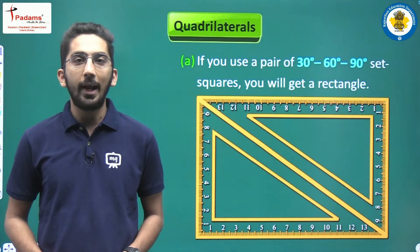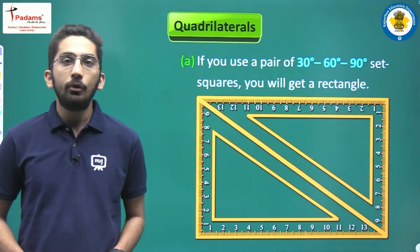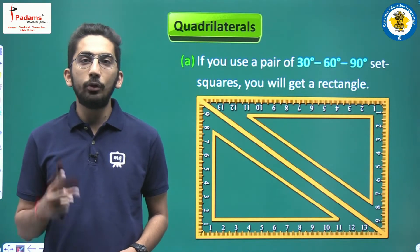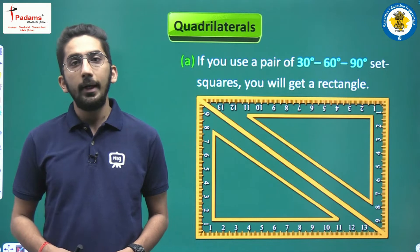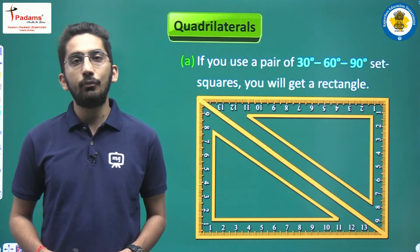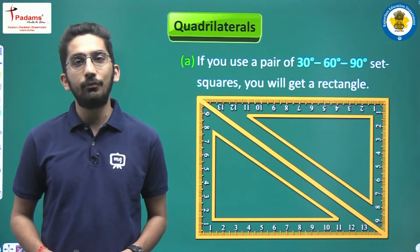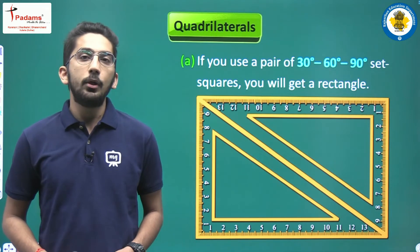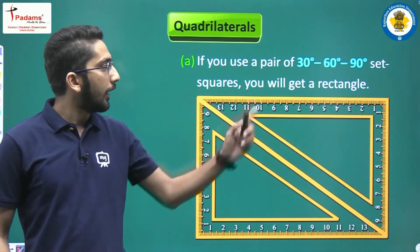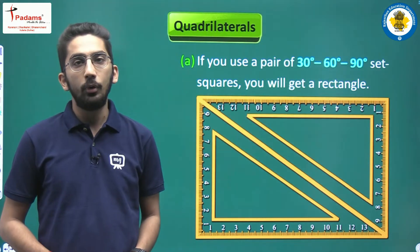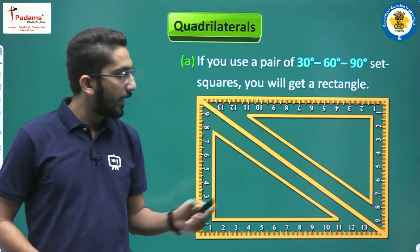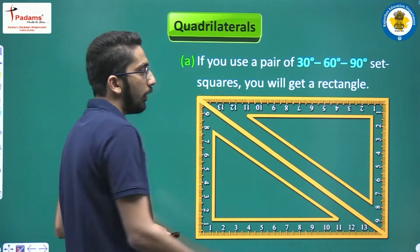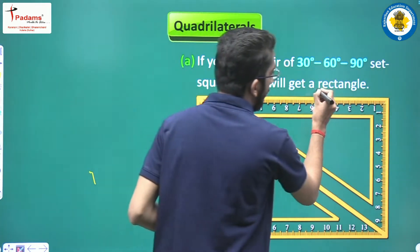The first one is a rectangle. Students, you will remember that in your geometry box, there were two set squares: one 30-60-90 and one 45-45-90. If you arrange two 30-60-90 set squares together, you will see the shape we call a rectangle.